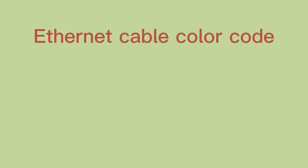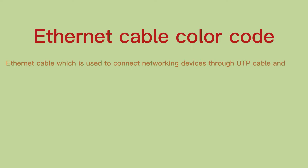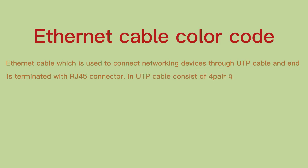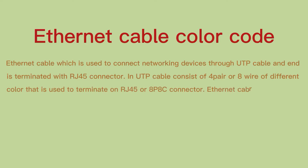Ethernet cable color code. An Ethernet cable is used to connect networking devices through a UTP cable, and each end is terminated with an RJ45 connector. A UTP cable consists of four pairs or eight wires of different colors that are used to terminate on an RJ45 or 8P8C connector.